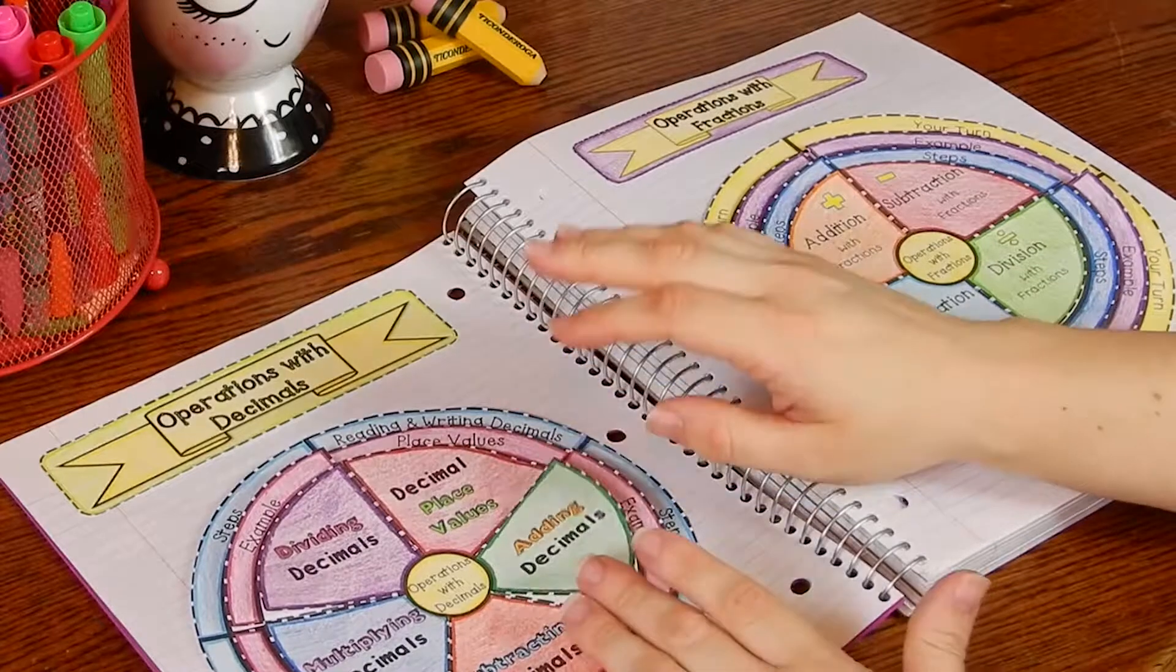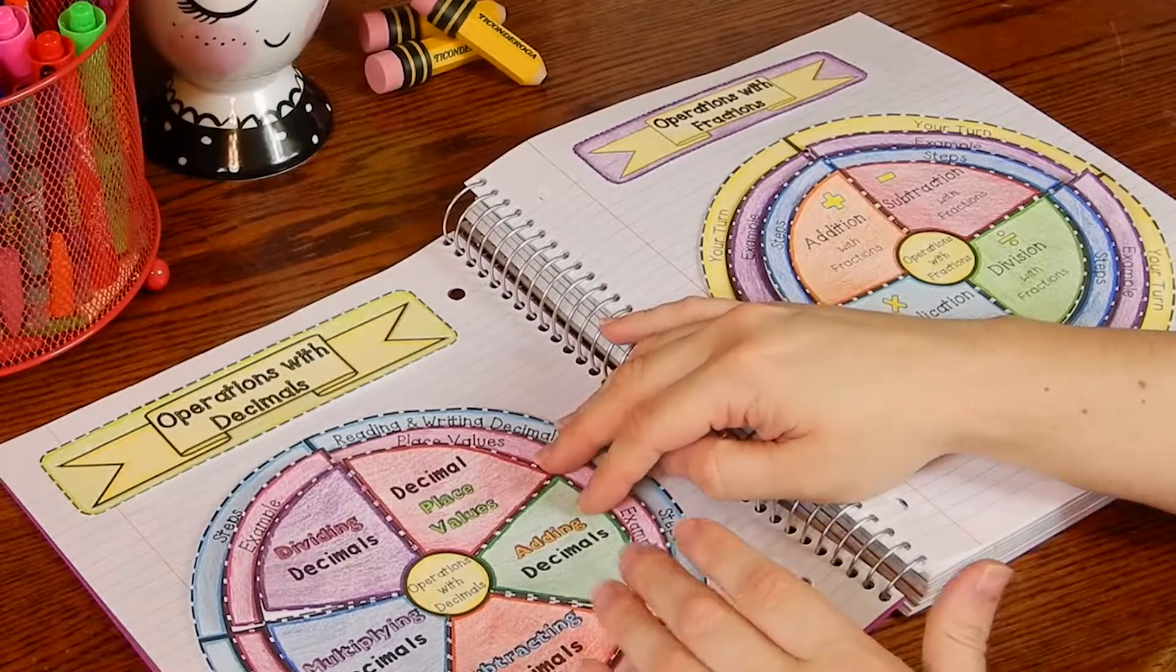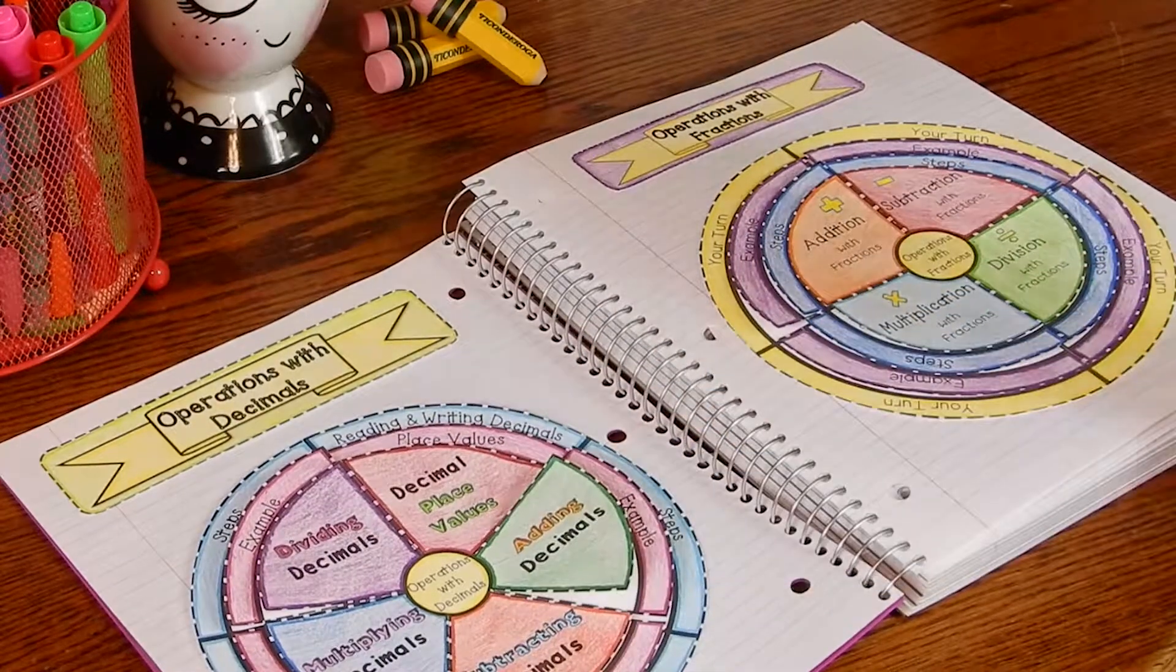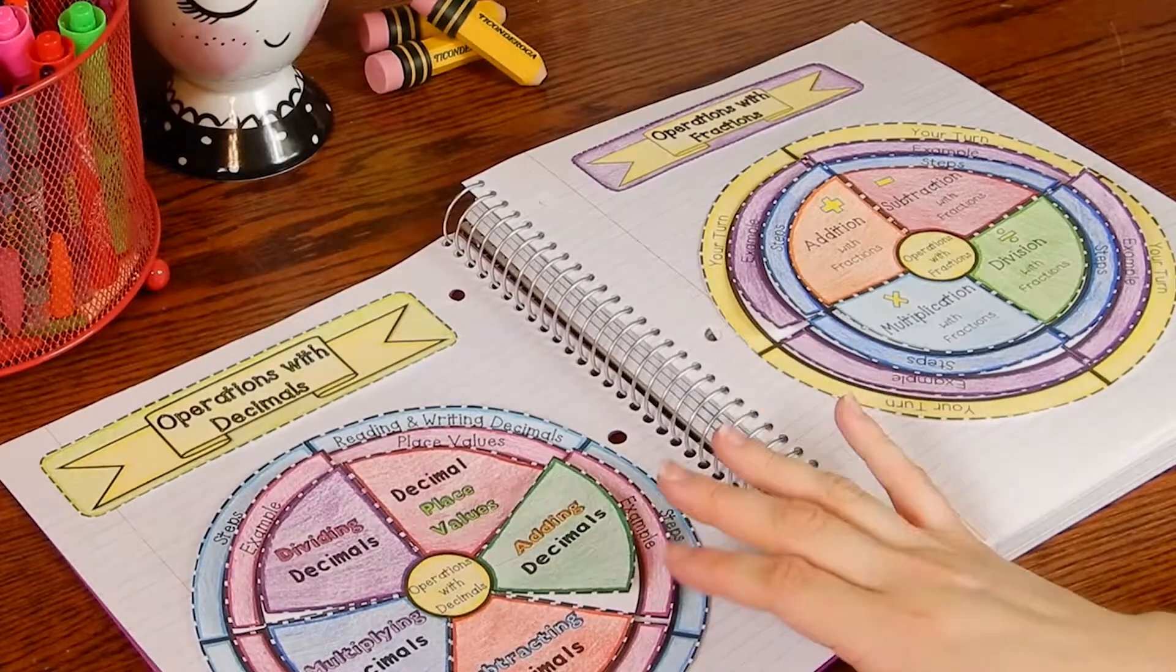I sometimes will project the answer key on my smart board and have students go ahead and fill out the wheel foldables that way once it's projecting, but you can also just have them fill it out on their own.